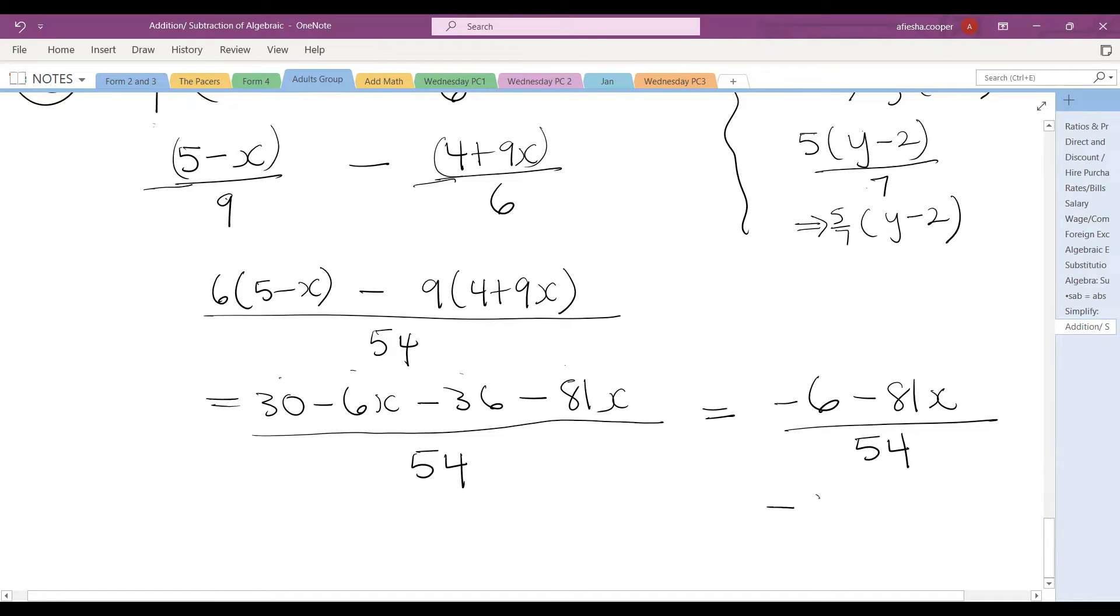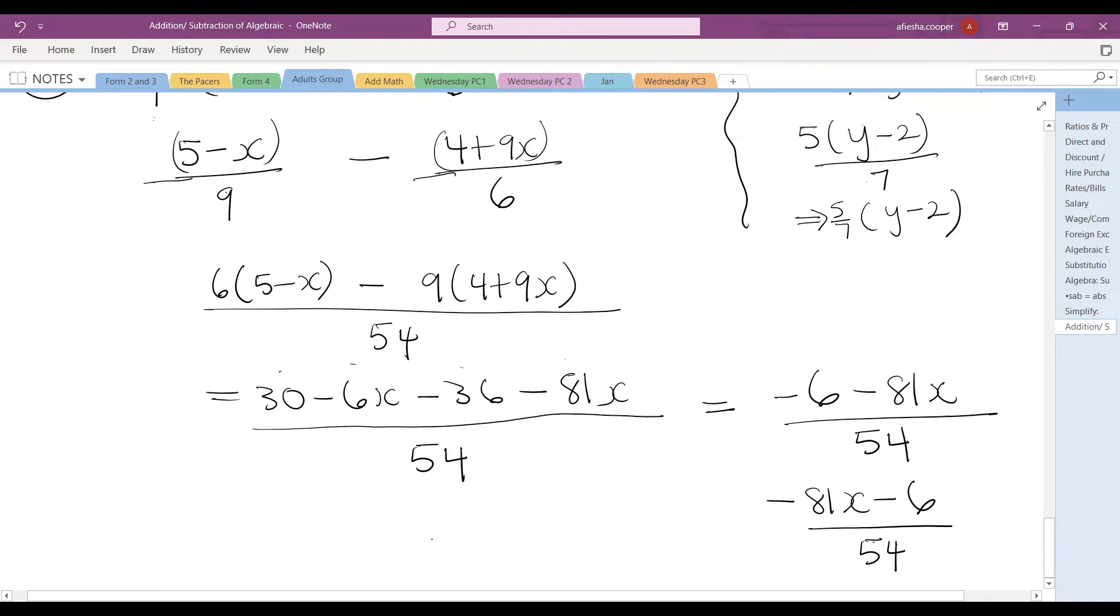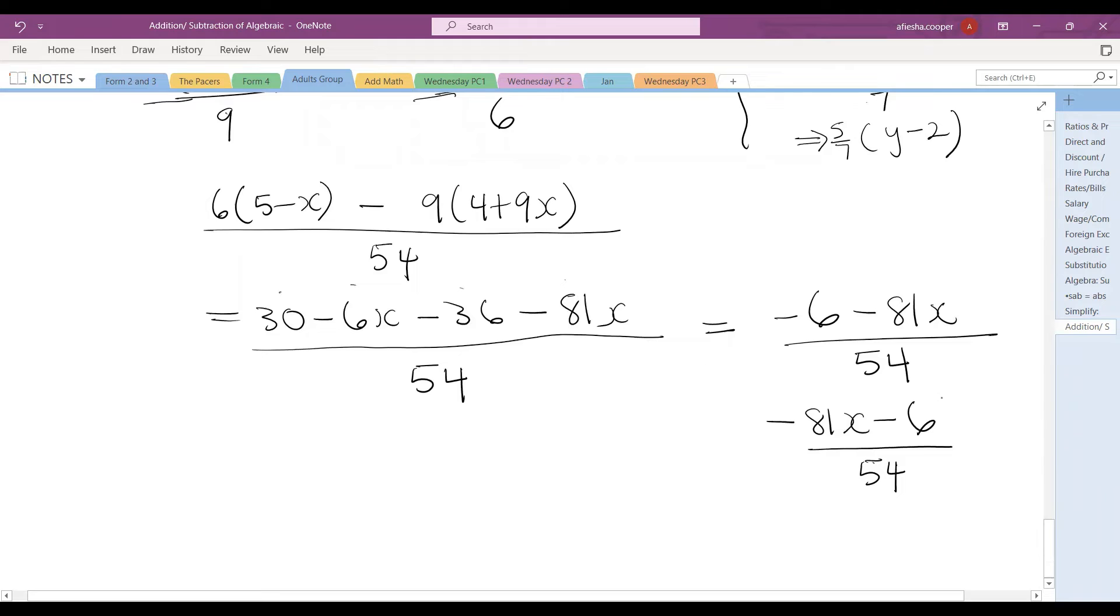If you want to put the x in front, 81x minus 6 all over 54. But what happened here is we did not use the lowest common multiple because we could have used 18. We could have used 18.